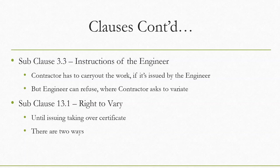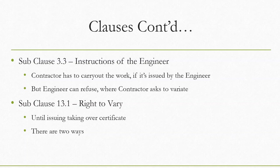Sub-clause 13.1, Right to Vary, states that until the issuance of the taking over certificate, the engineer can instruct a variation. There are two basic ways a variation can happen. First, the engineer can directly issue an instruction — please do this, please change this, please omit this, please change your program as per this study. That instruction should be in written form; it should not be a verbal instruction.